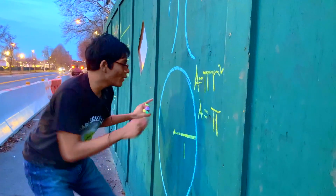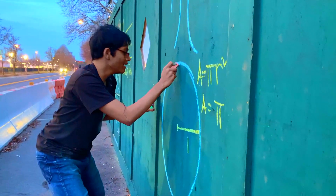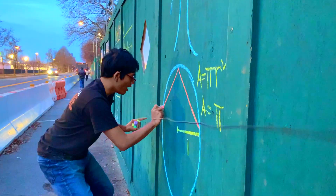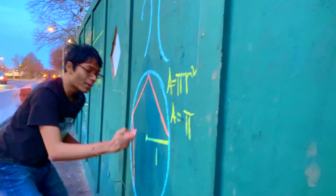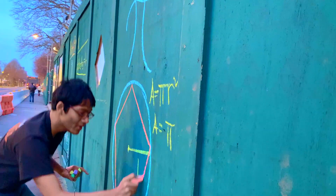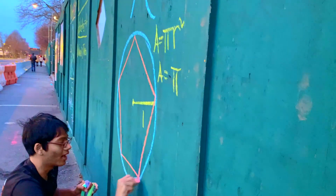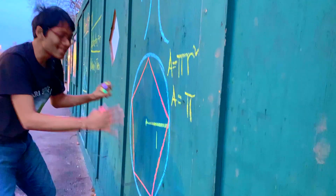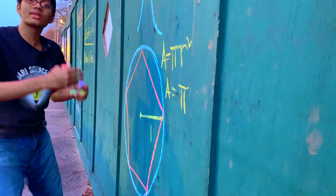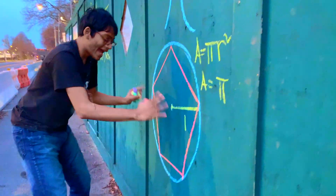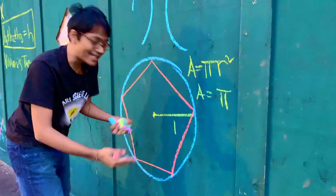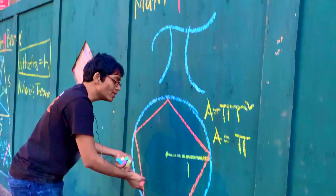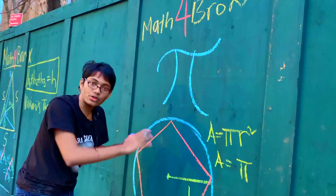We're going to inscribe a regular polygon inside of this circle. This regular polygon, for now, is going to be a pentagon. Now, realize that as this pentagon becomes more regular — in other words, as this pentagon has more and more sides — it's going to better approximate the area of the actual circle.